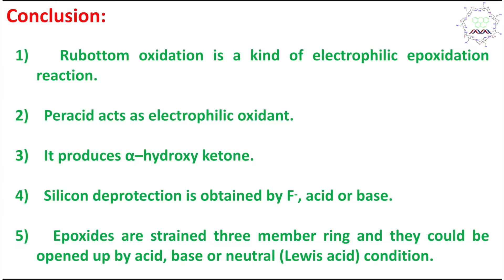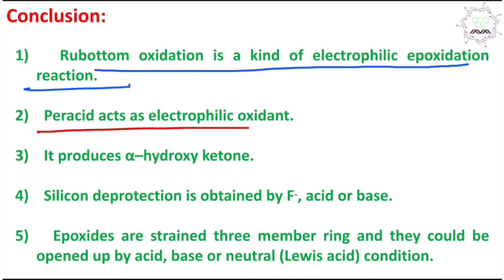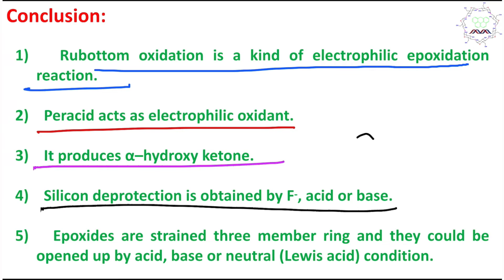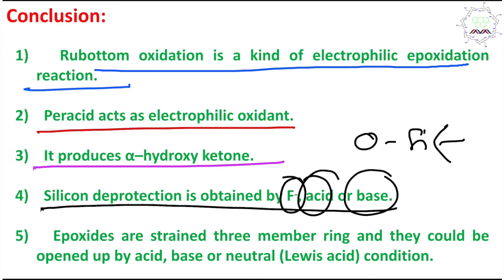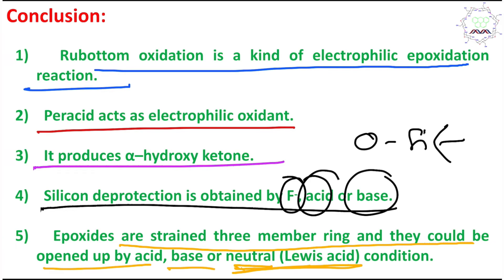In conclusion, what have we learned today? Rubottom oxidation is a kind of electrophilic epoxidation reaction. Peracid acts as the electrophilic reagent and it produces the alpha-hydroxy ketone. Silicon deprotection of the O-silyl ether is done by either fluoride, acid, or base. Finally, epoxides are strained three-membered rings that can be opened by acid, base, or neutral Lewis acidic conditions.